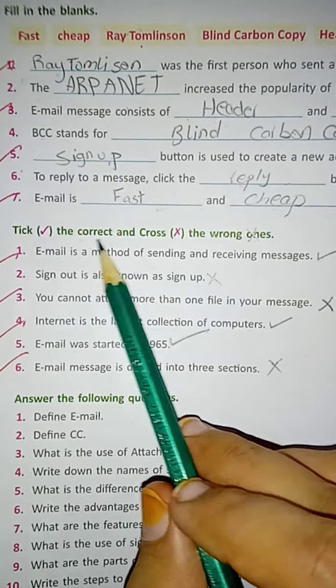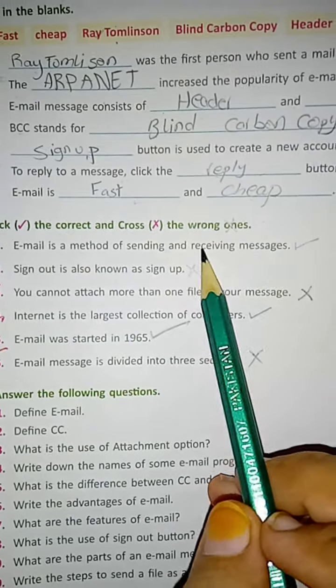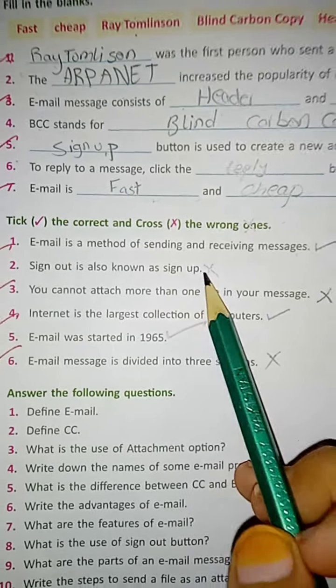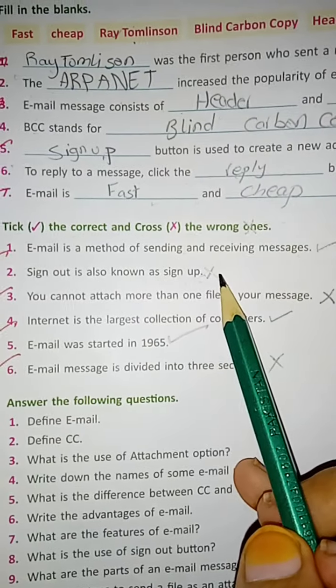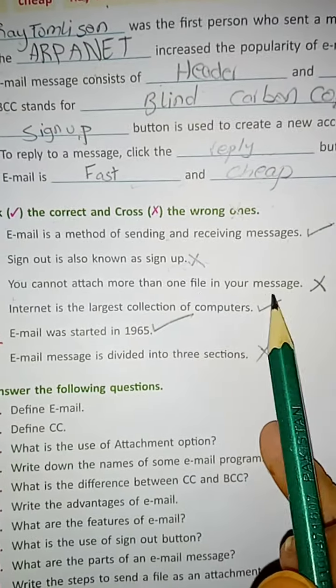Next we have true/false. Tick the correct and cross the wrong ones. Email is a method of sending and receiving messages: true. Sign out is also known as sign up: false. It is also called log out. You cannot attach more than one file in your messages: false.